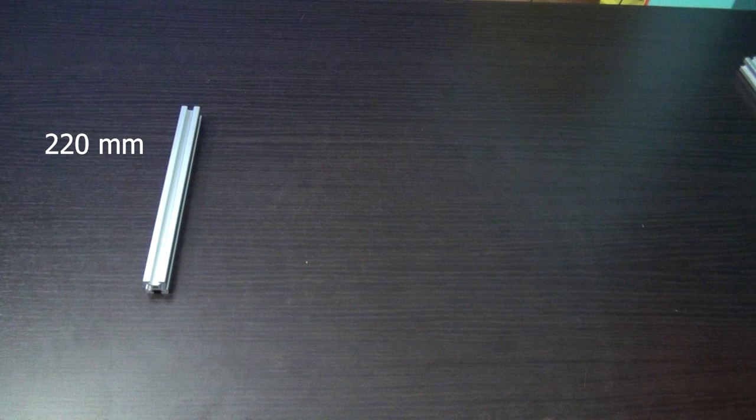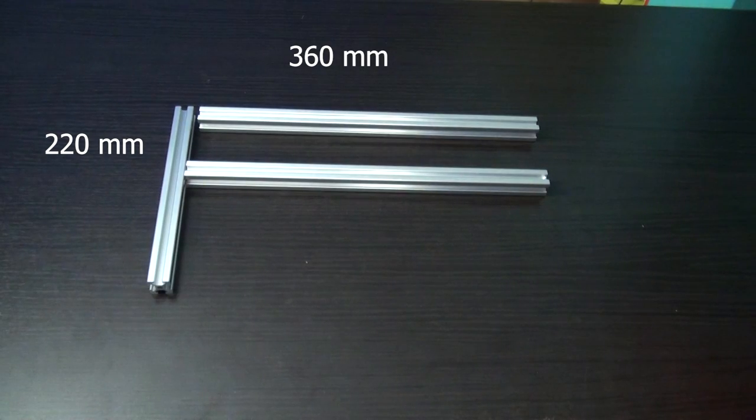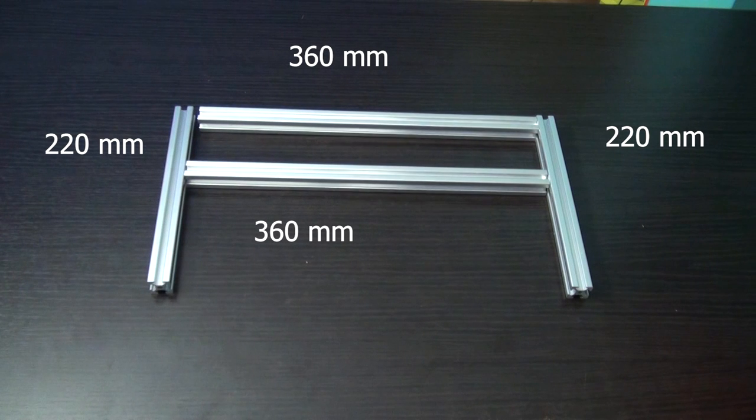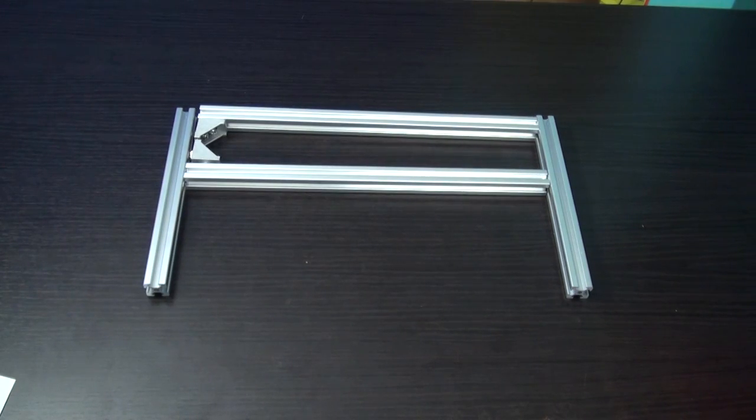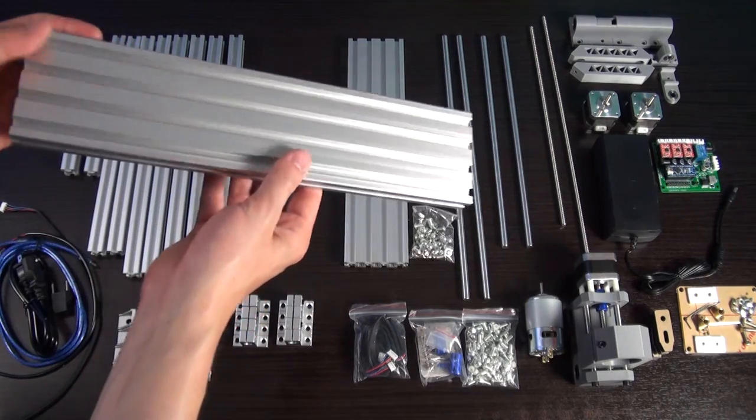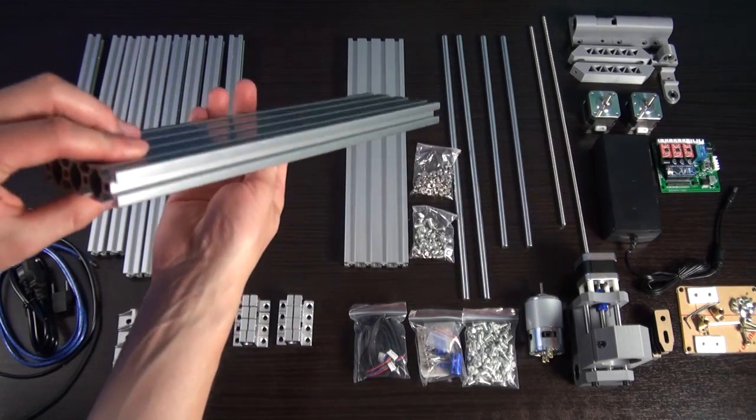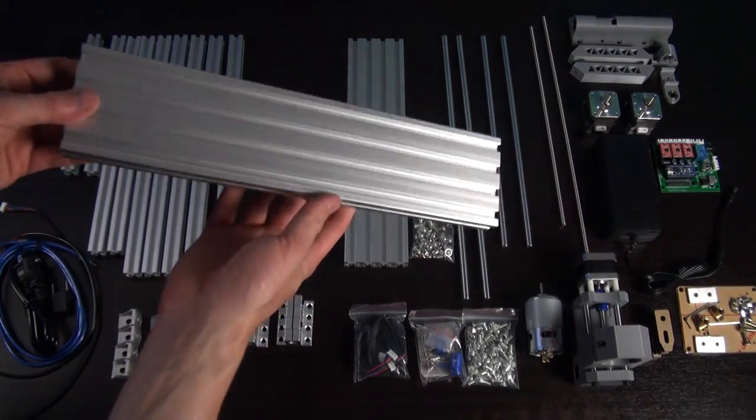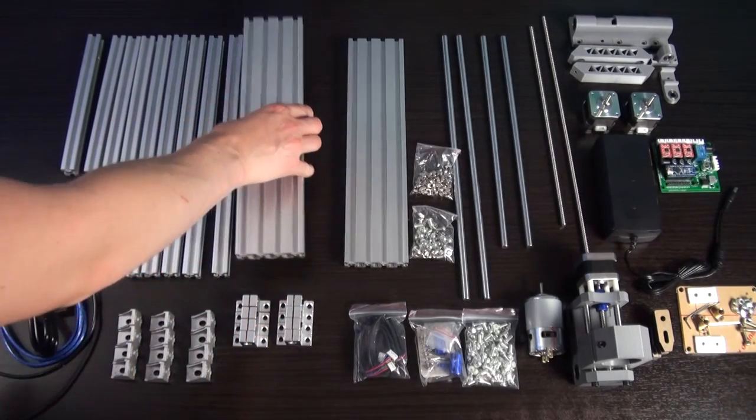The two 220mm profiles are placed on the outside and the remaining two 360mm profiles in the middle. Four corner brackets are used to join everything together. Use the trick with the extra piece of material to make sure everything is aligned correctly. Because the 220mm profile is not available anymore, you can use another part like the profile used for the machine bed.